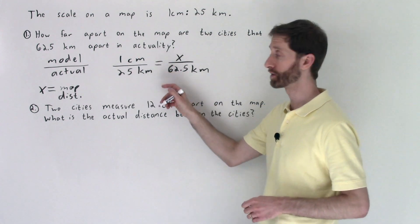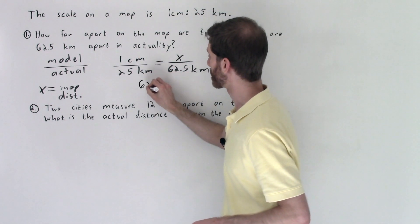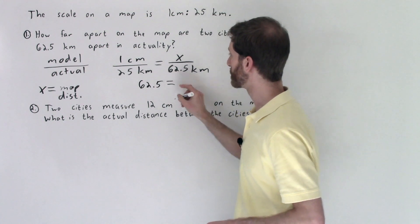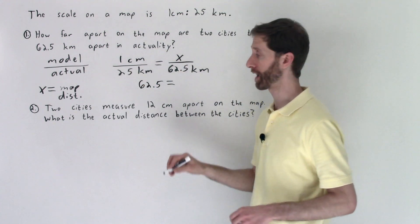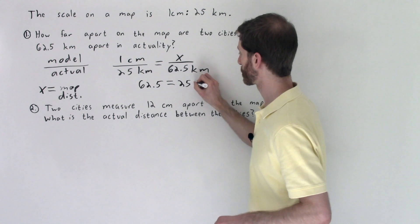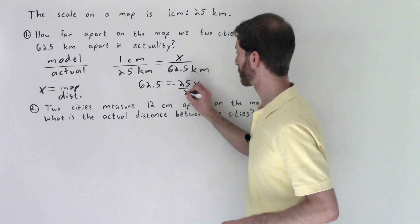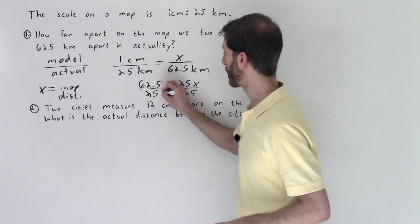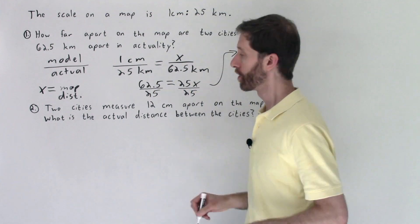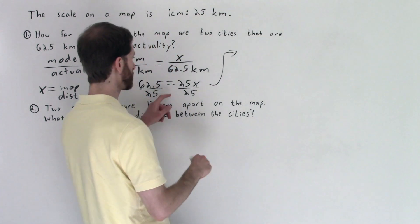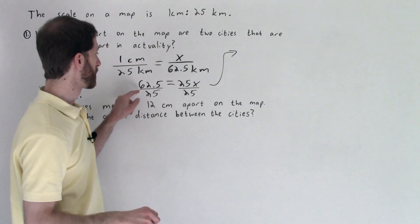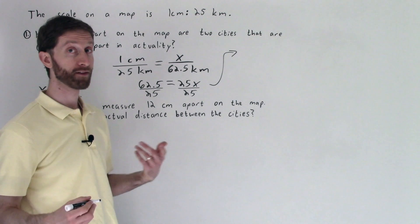So I'm going to multiply one by 62.5, that gives me 62.5 is equal to x times 25, 25x. Now to undo 25 times x we divide both sides by 25. And what we're left here, I'll put the work over here, what we're left with here is a very simple calculator problem.